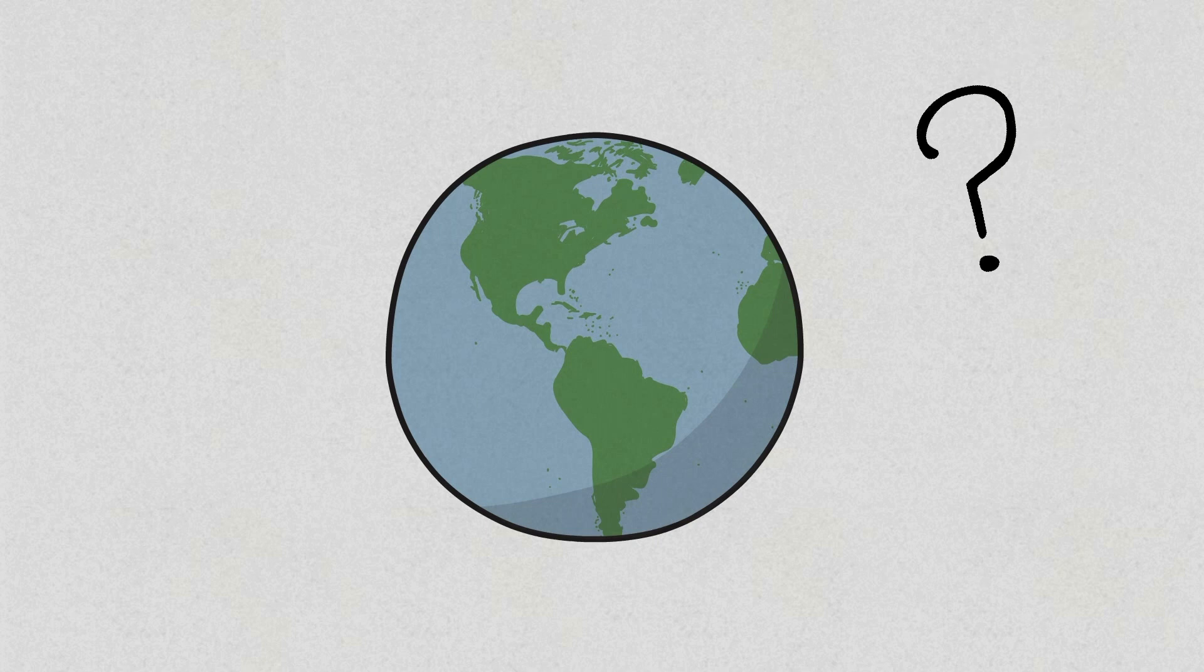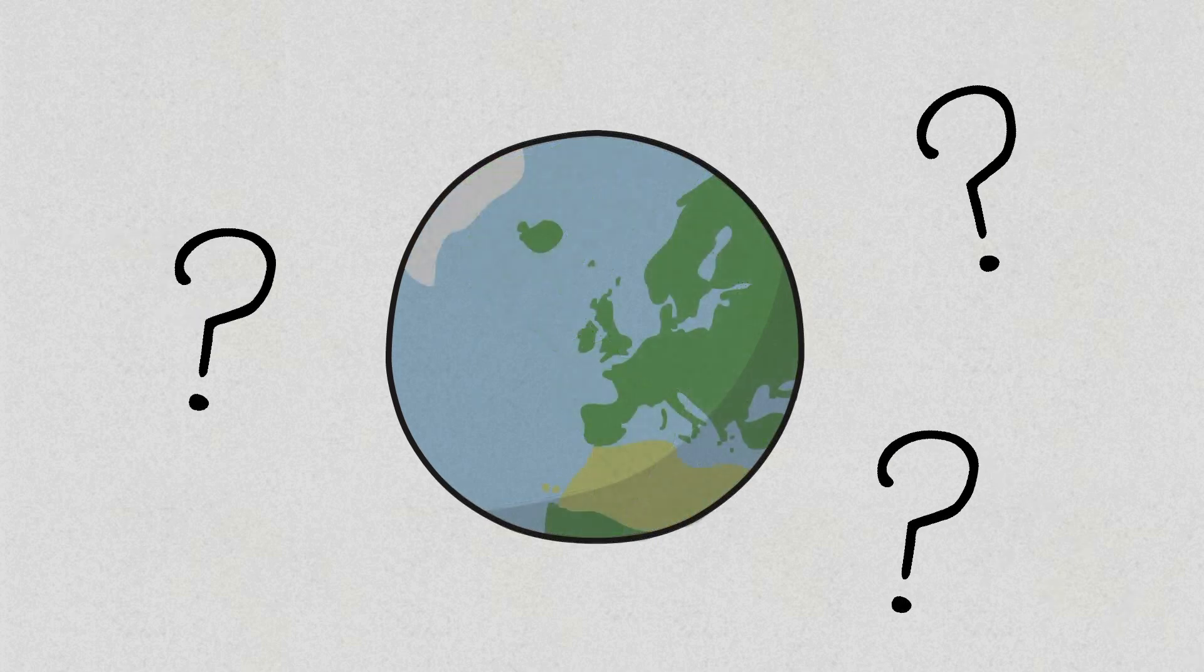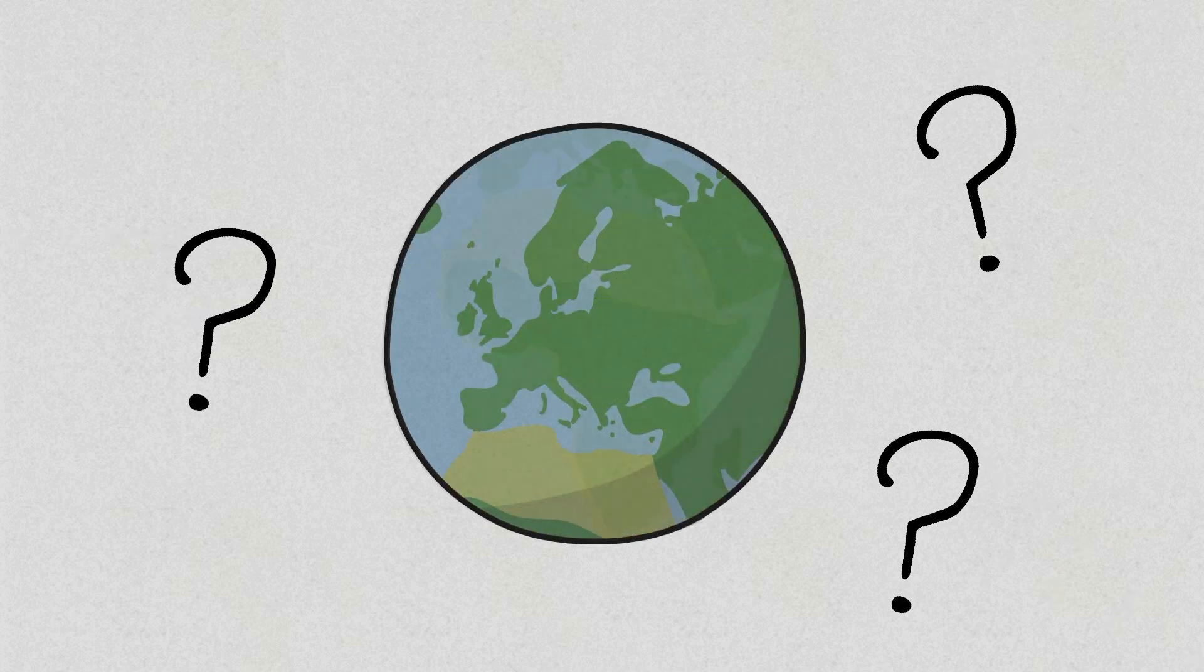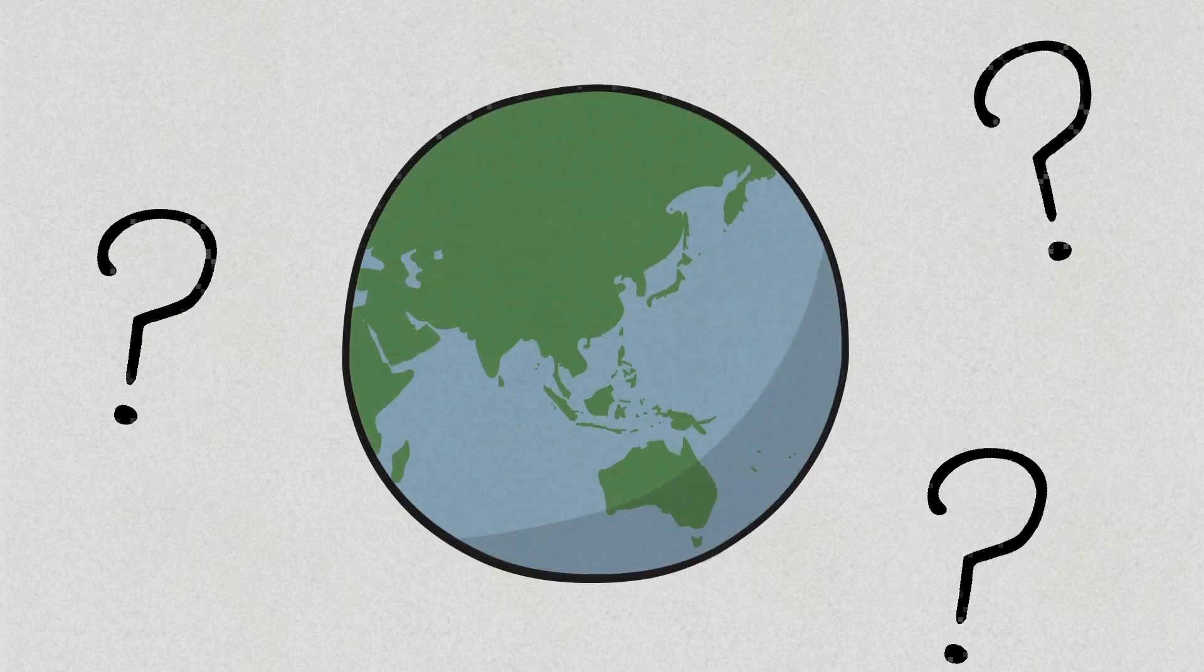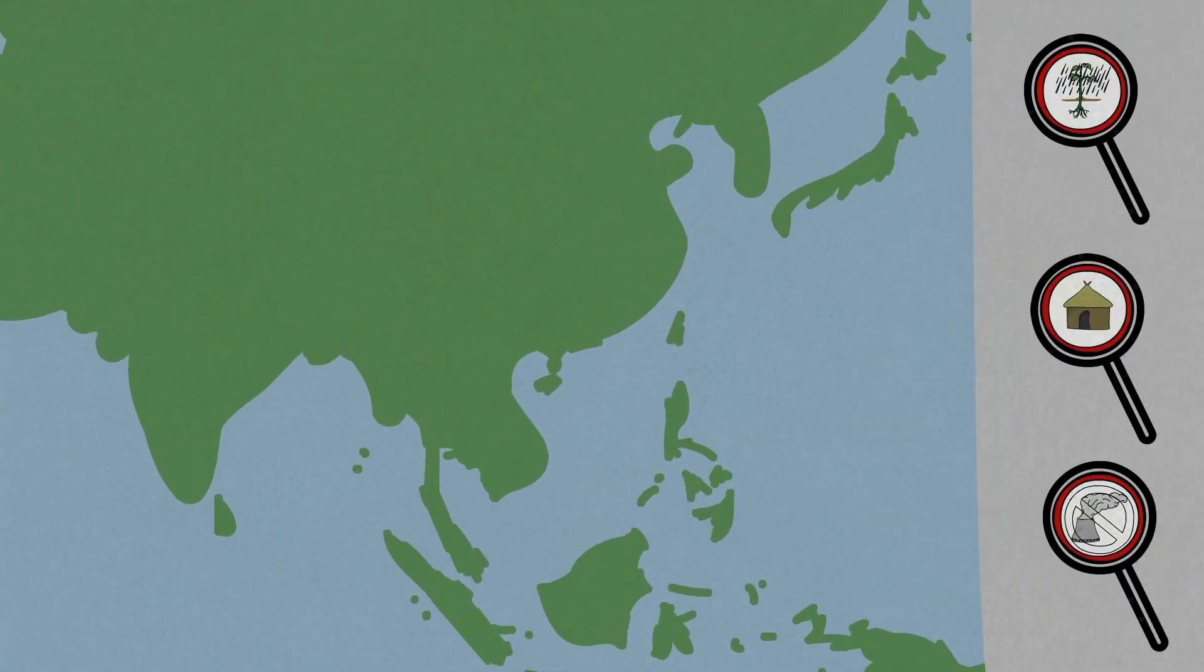So how do we evaluate if, when, and where rice fish systems should be implemented? Suitability mapping is a technique that has been developed to provide insight into the agroecological suitability of land, enabling priority areas to be identified that are best suited to, and will most benefit from the implementation of a particular type of system.